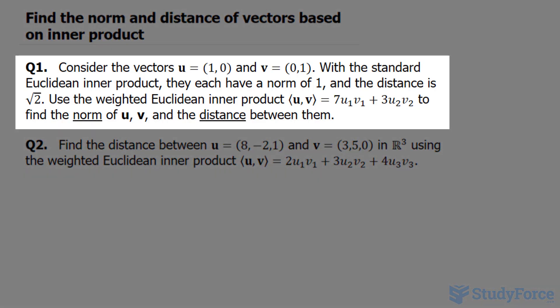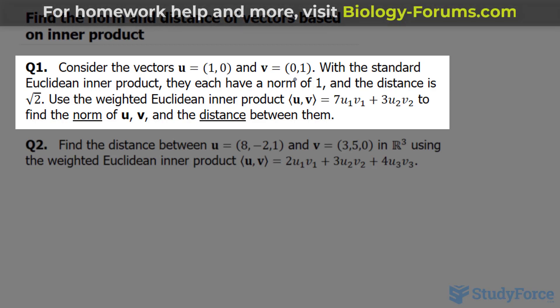Question 1 reads: consider the vectors u and v, and they have their x and y components written. With the standard Euclidean inner product, they each have a norm of 1, and the distance is the square root of 2.